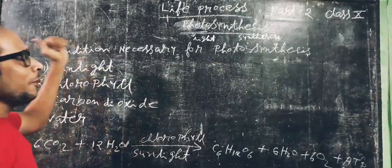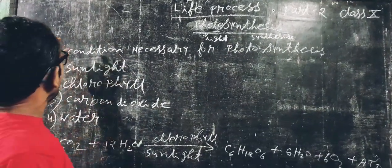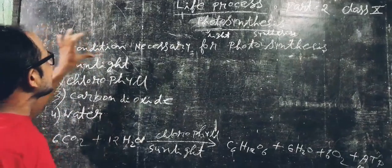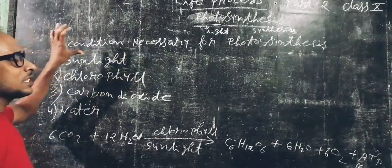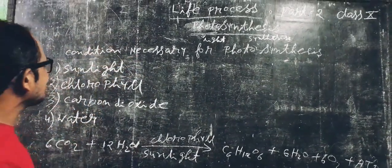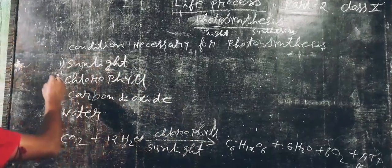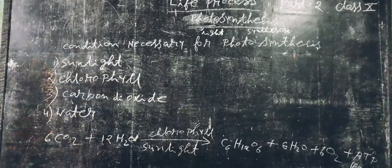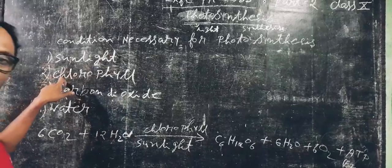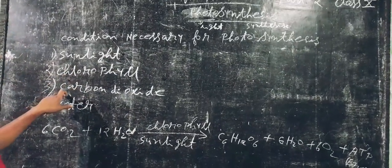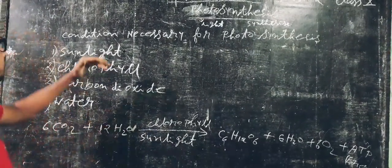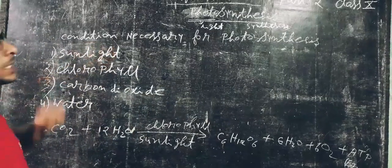For photosynthesis, some conditions are necessary. The conditions which are necessary for photosynthesis are: number one, sunlight; number two, chlorophyll; and number three, carbon dioxide and water.